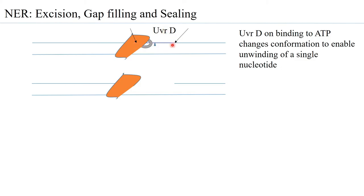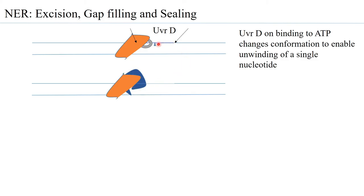As UVR-D opens up and removes the strand, UVR-C is released and a gap is left. This gap is filled by DNA polymerase — specifically in many systems DNA Pol I. The DNA Pol I uses the 3' OH of the strand to synthesize the strand that was removed, ensuring correct nucleotides are being added through its 3' to 5' exonuclease activity for proofreading.